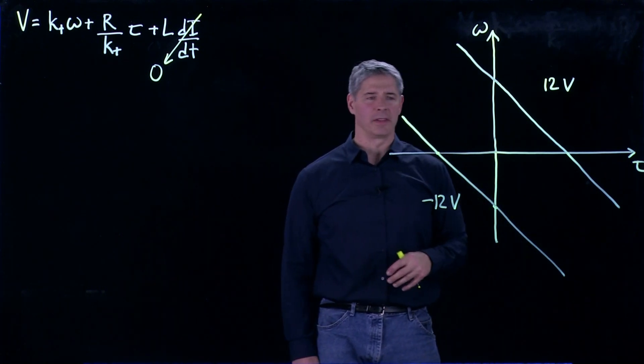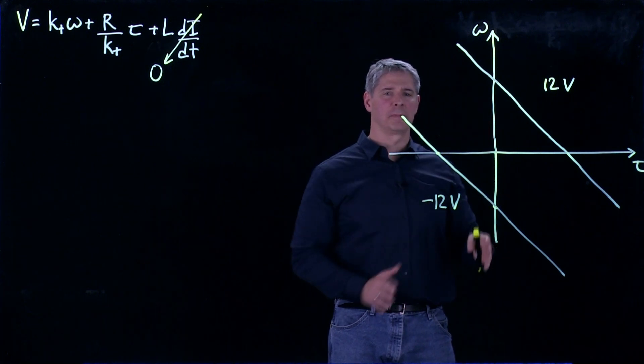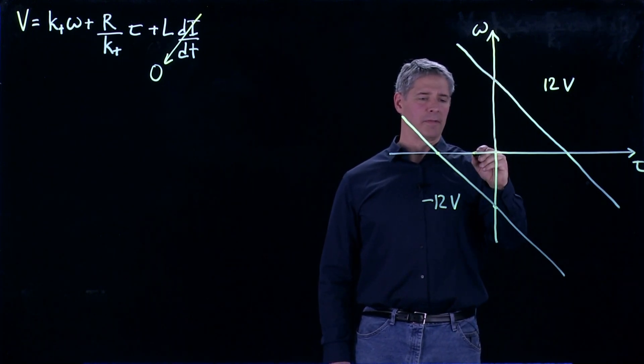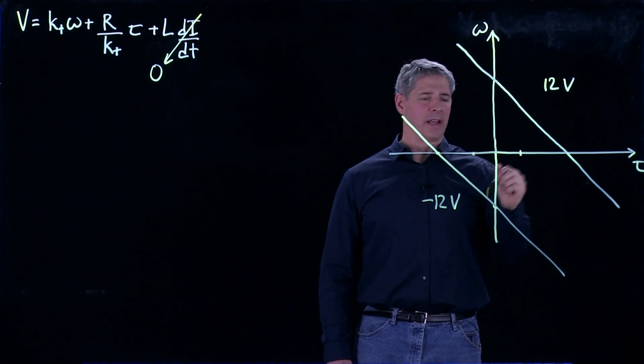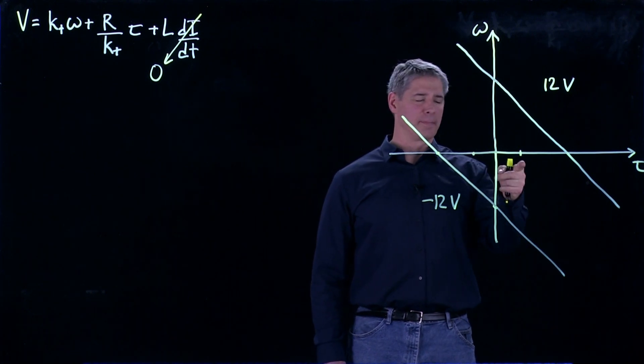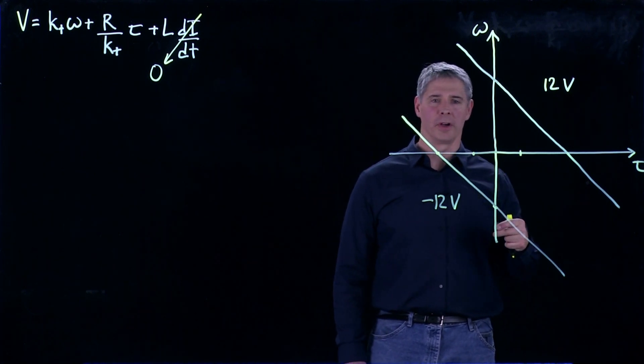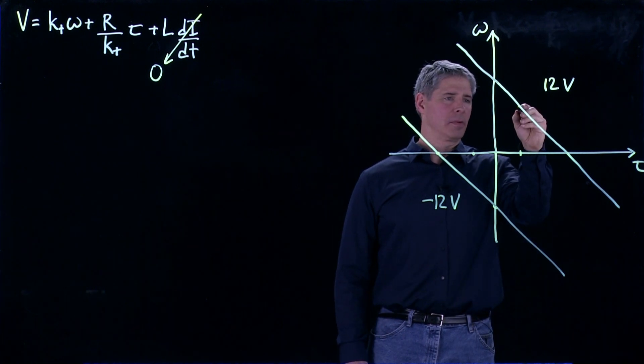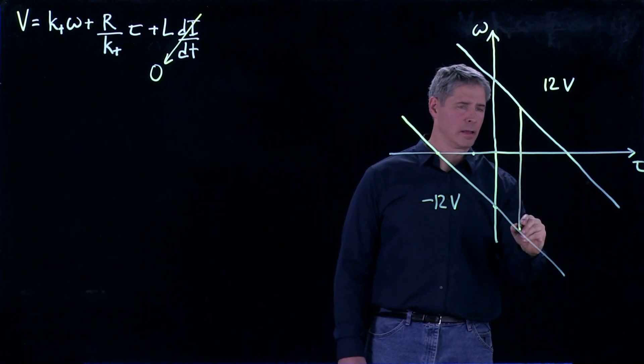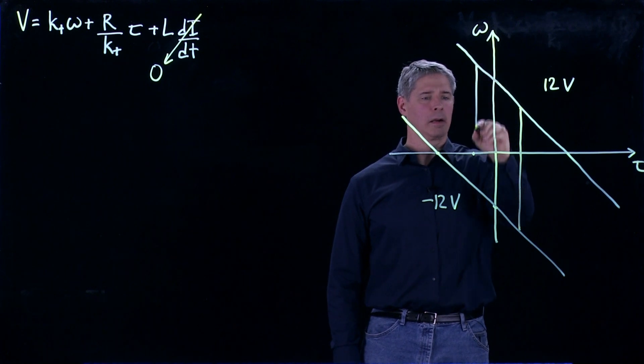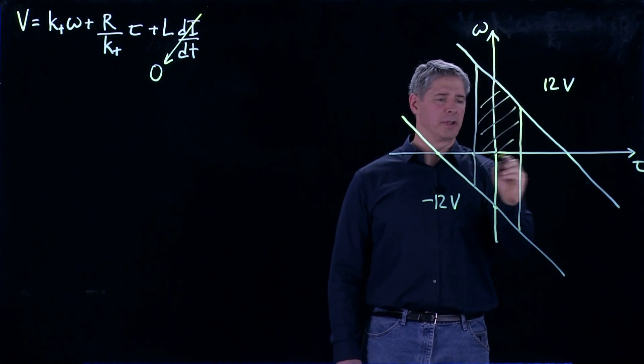We can also think about the continuous operating region in the speed-torque plane. And it's going to look something like, if this defines the maximum negative current and the maximum positive current that can go through the coils before heating them up too much, you can just draw this band here. And this is our continuous operating region.